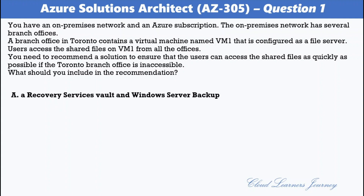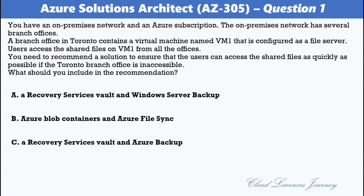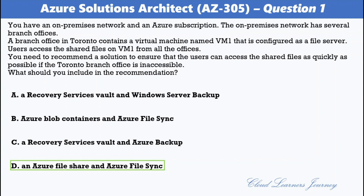The options are: A. Recovery Services Vault and Windows Server Backup; B. Azure Blob Containers and Azure File Sync; C. Recovery Services Vault and Azure Backup; D. Azure File Share and Azure File Sync. The correct option is D: Azure File Share and Azure File Sync. Azure File Sync enables centralizing organization file shares in Azure Files while maintaining local access to the data. In this scenario, you can use Azure File Sync to synchronize the shared files on VM-1 to an Azure File Share, ensuring that the latest versions of the files are available in Azure.